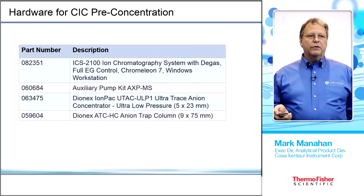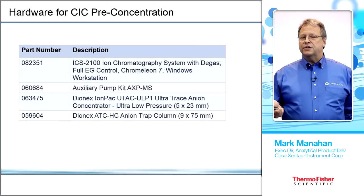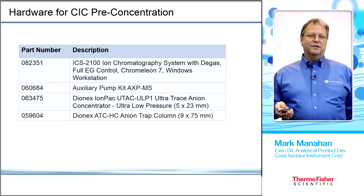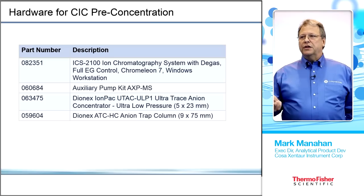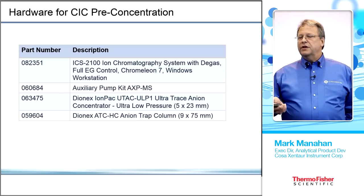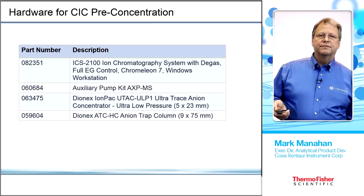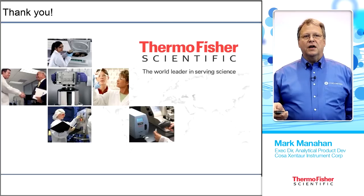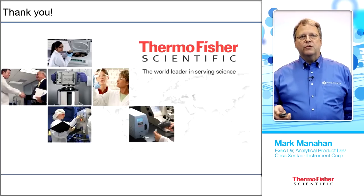The hardware required for pre-concentration includes the ICS-2100 — because it only requires water with no eluent preparation — the auxiliary pump, the trap column, and the low-pressure concentrator. Thank you very much for your time. If you have any questions, contact COSA Xentaur or visit cosaxentaur.com or ThermoFisher.com.